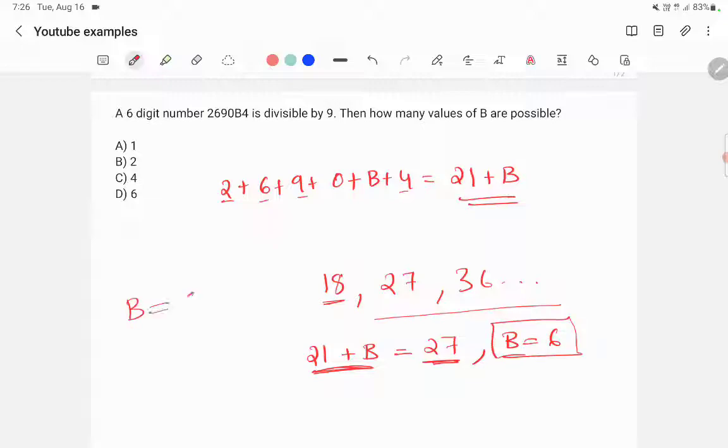So B is equal to 6. But here it didn't ask what is the value for B. It asked how many values of B are possible. So only one value of B is possible. You need to be very careful here.